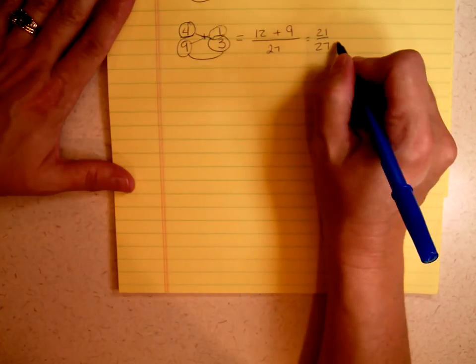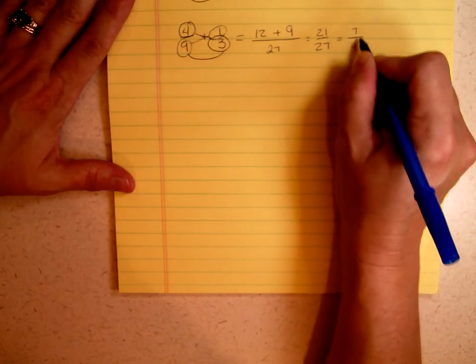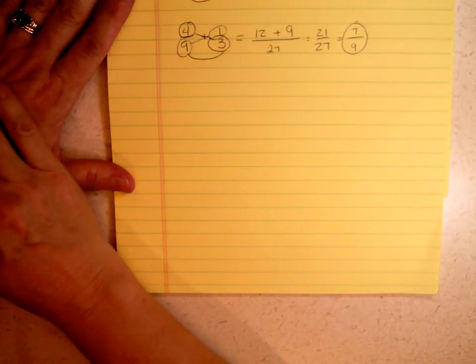I look at both of those numbers, and I recognize that I can take a 3 out of each of them. 21 divided by 3 is 7, 27 divided by 3 is 9. So I get 7 ninths.